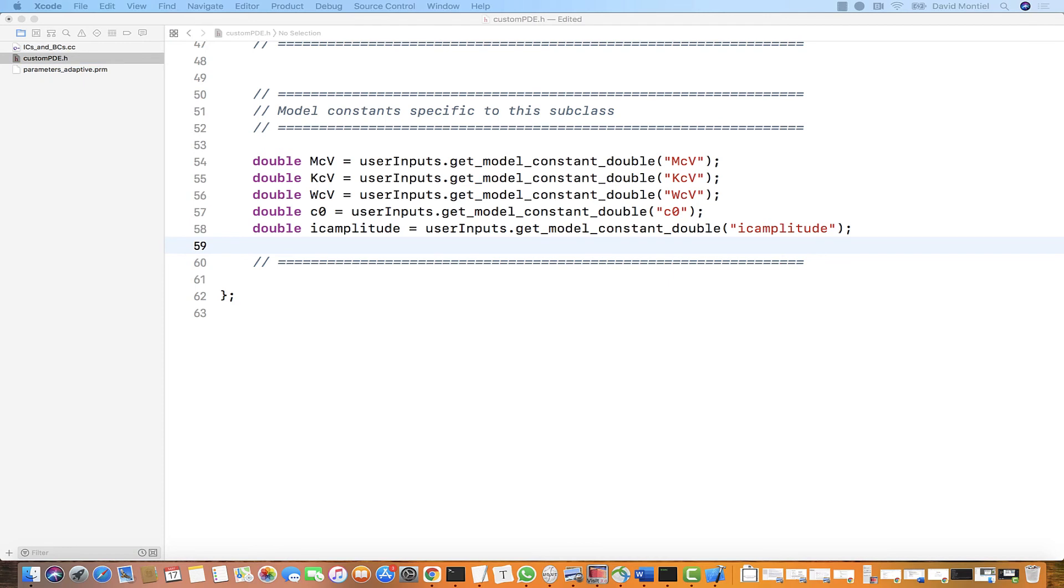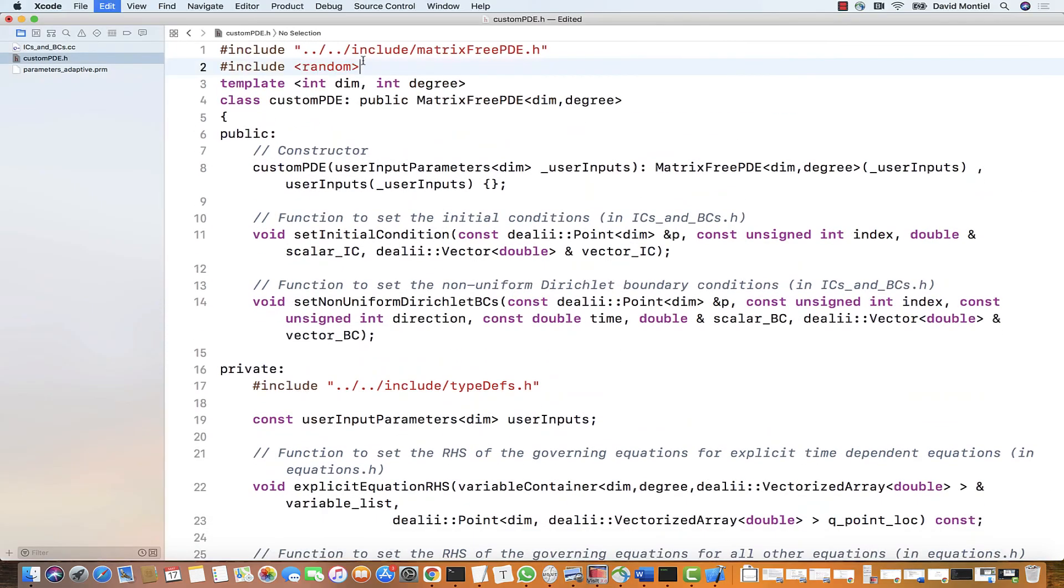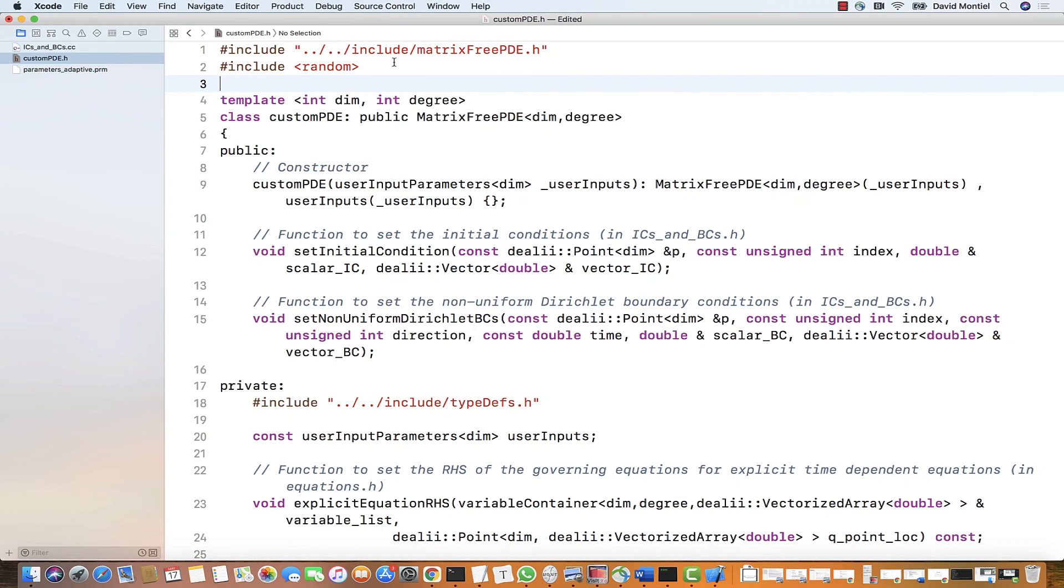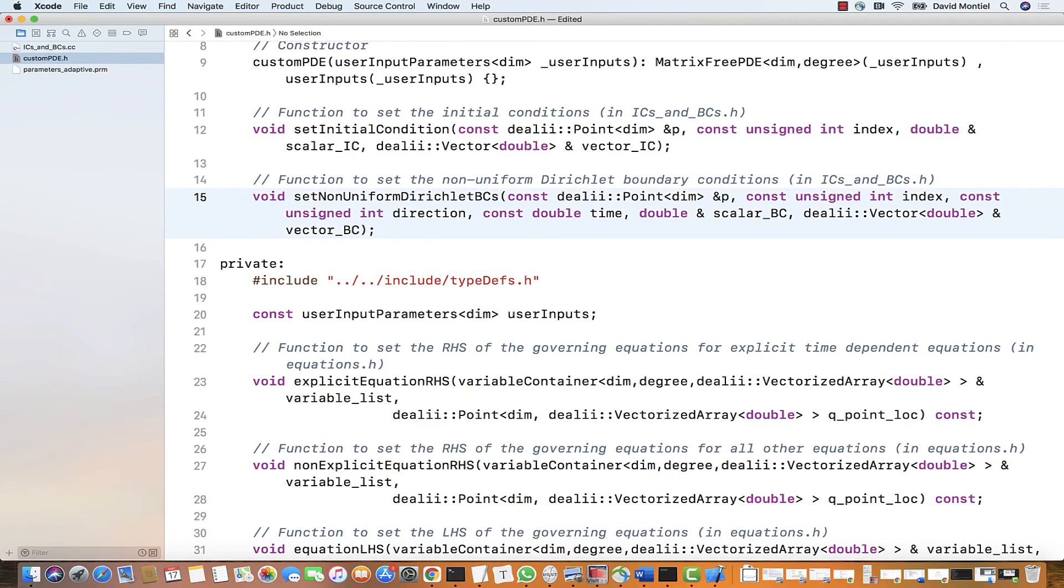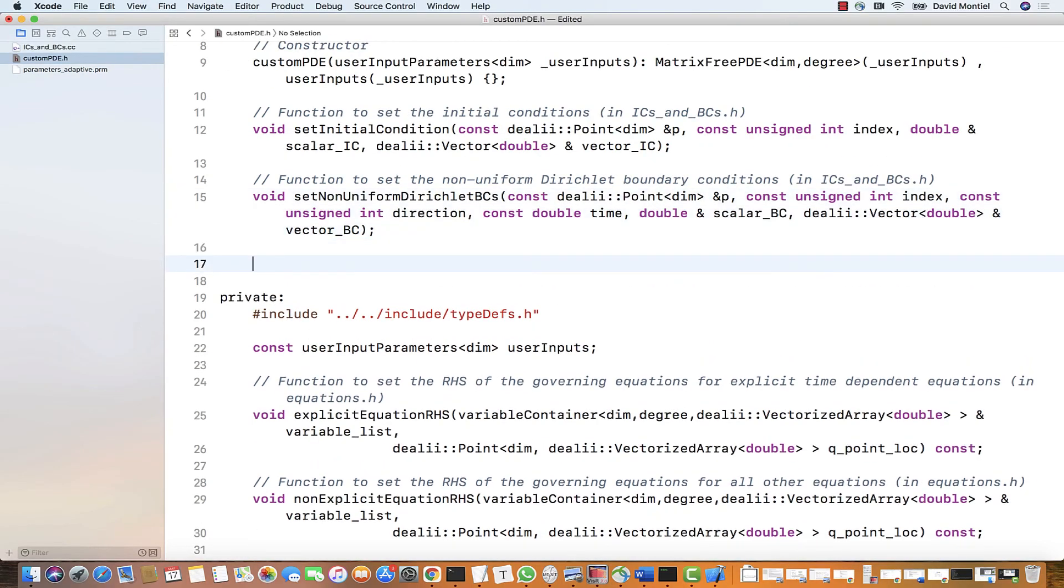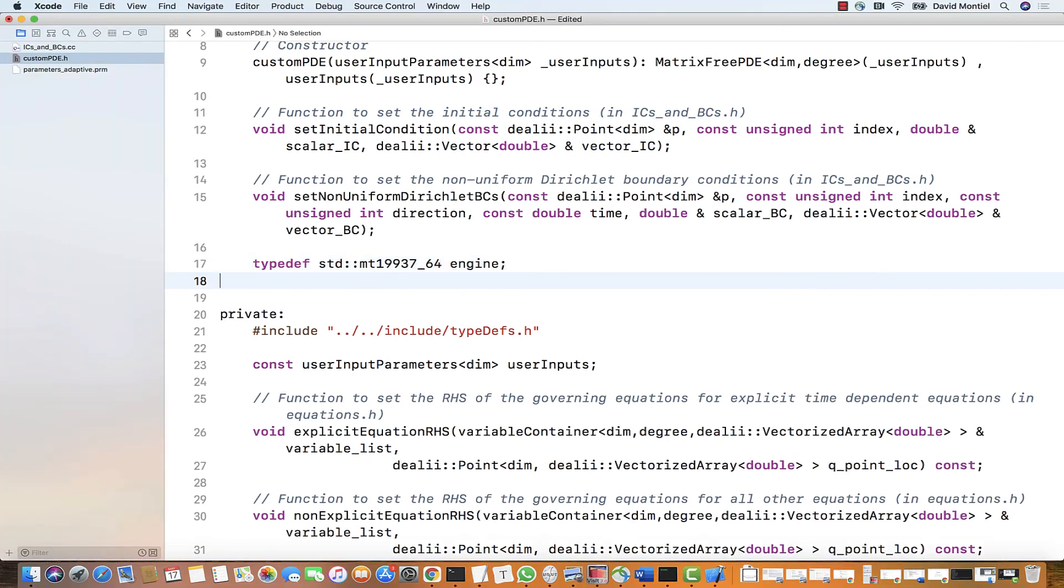Okay, one thing we will have to do here is declare the random variable used in the initial condition and initialize it using a seed. But before we do any of this, we need to include the random library as a header. Now let's specify two typedefs for existing C++ classes that we will need. We'll do this in the public section. The first one we will call engine and it is for a class to generate random numbers. You can google this if you want to know more about this specific generator.